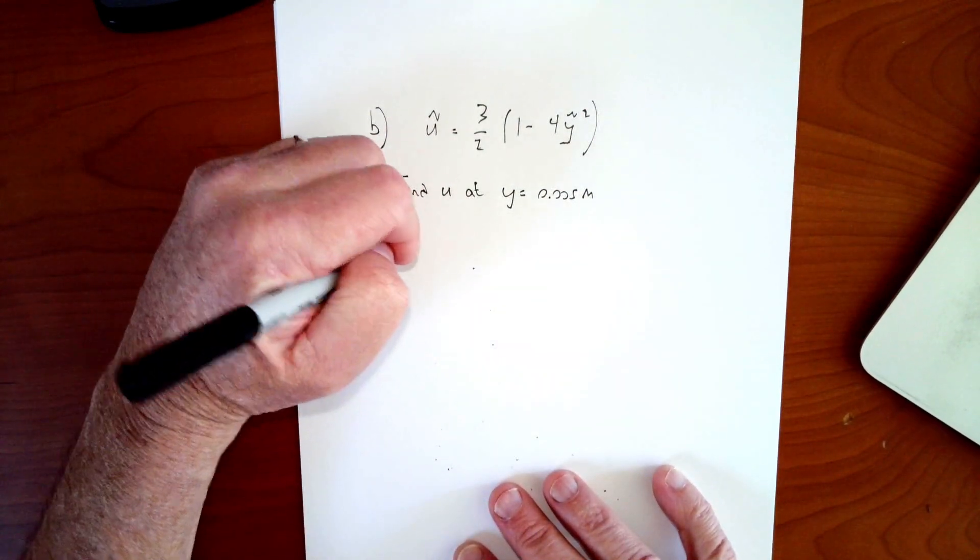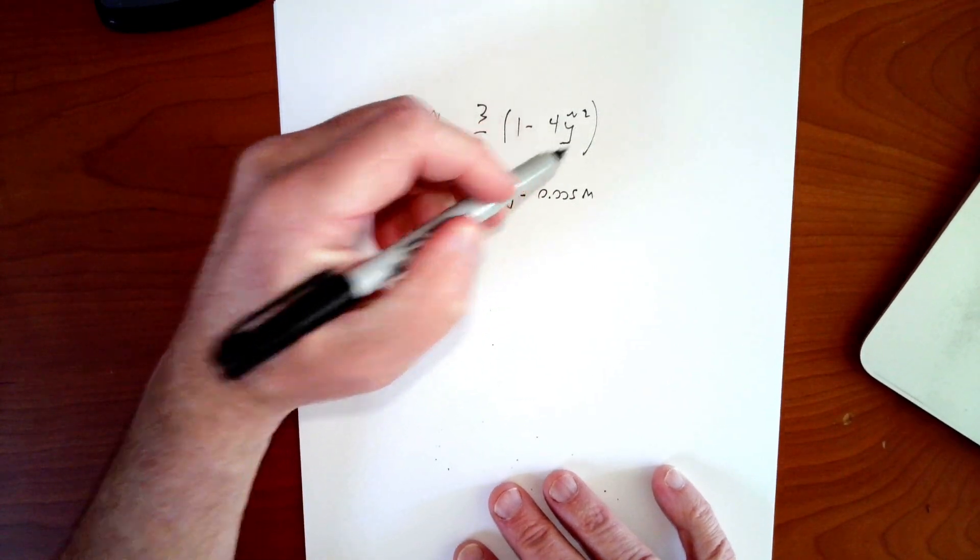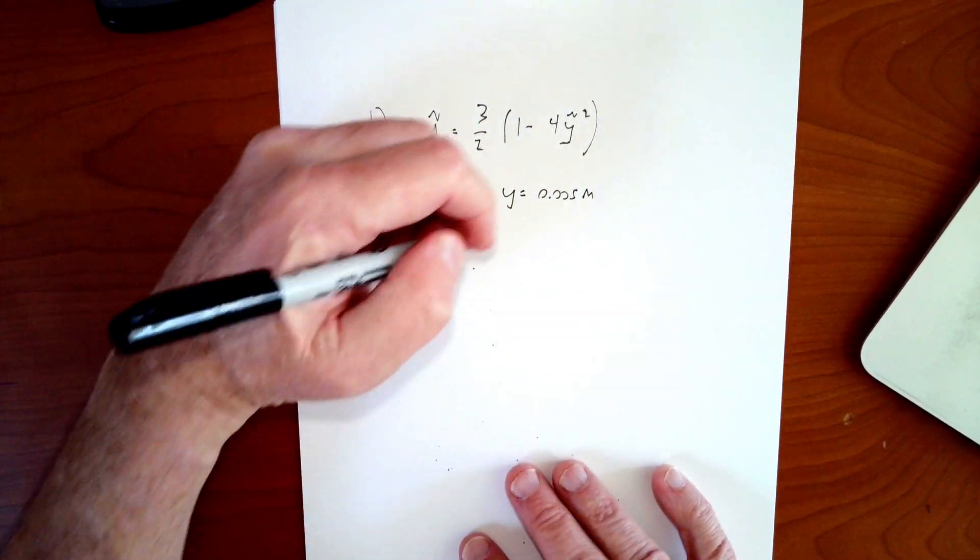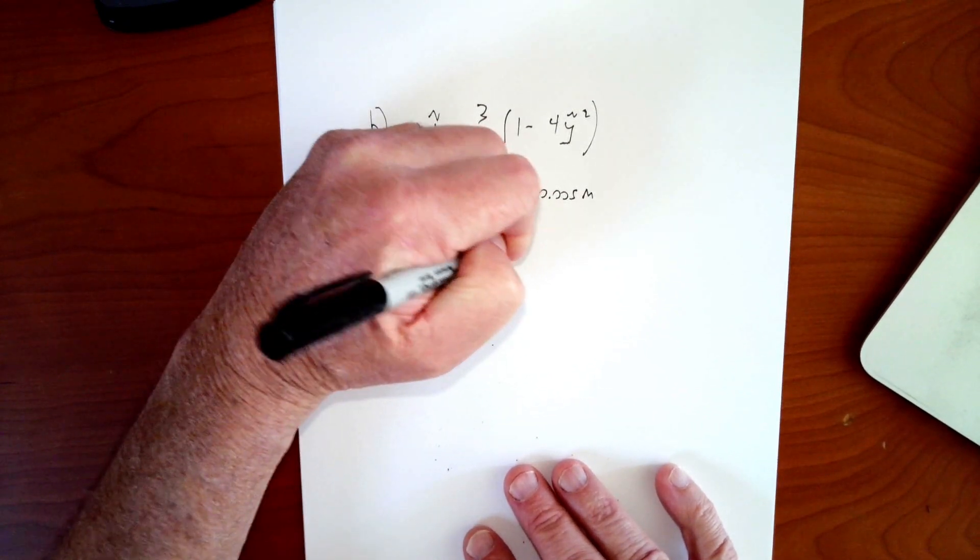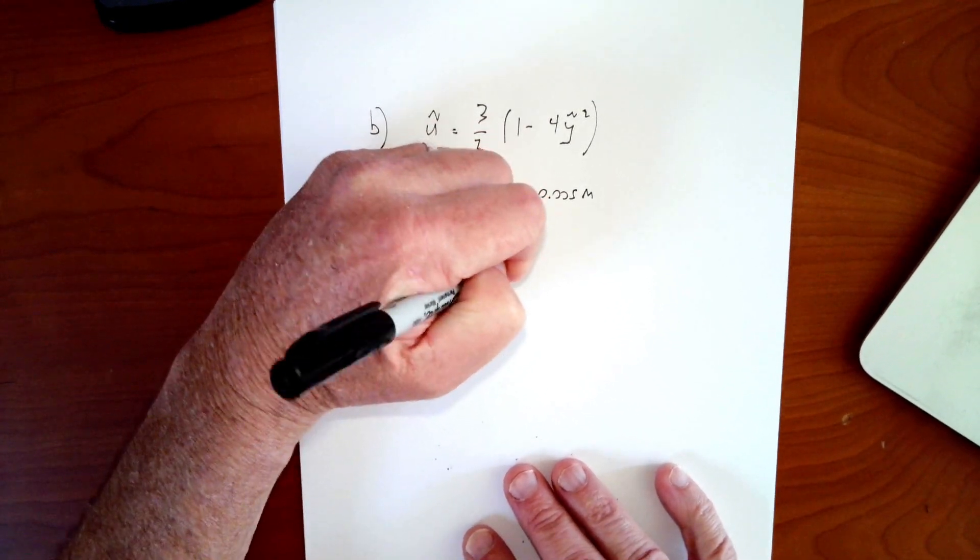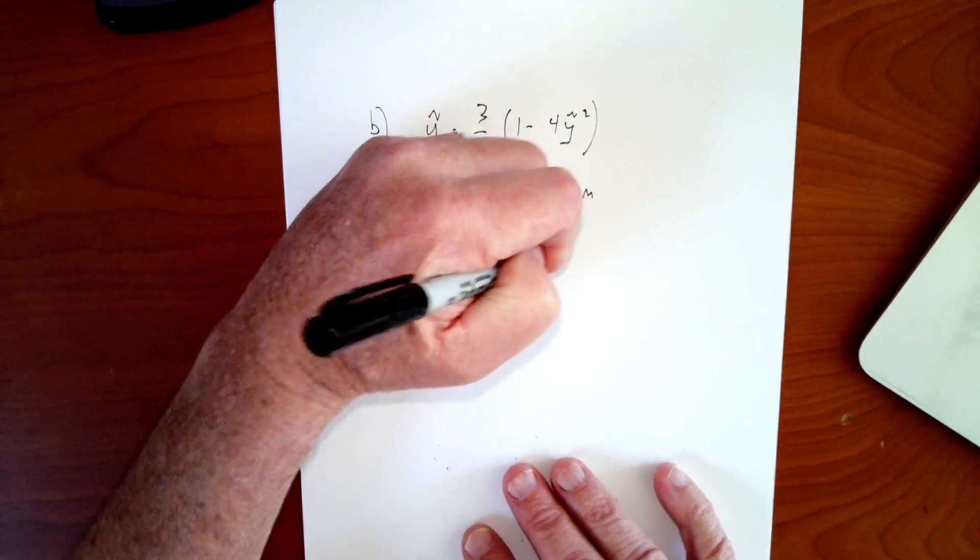First thing we have to do is define y tilde because we need to plug a y tilde in here for y equals 0.005. So y tilde is defined as y over h. So that's 0.005 divided by the total h, which is 0.02. These are both in meters.